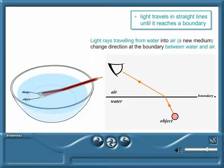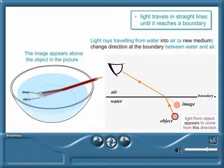Your brain doesn't know that the light ray changed direction at the boundary. It assumes that the ray travelled in a straight line and so interprets the image to be in a position above the actual object. Does the image appear above the object in the picture?